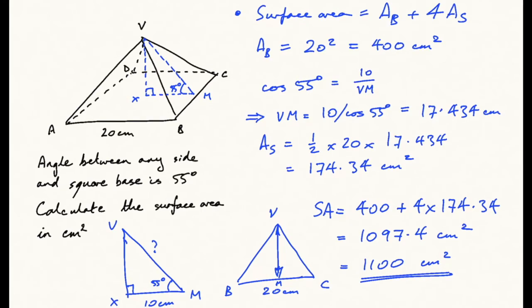That's the answer. An estimate of the mark scheme will be: one mark for finding the area of the base—that's a nice easy mark to pick up. A mark for finding the slant height VM, using that to find the area of one side, combining the base area and four of the sides to find the surface area, and then the final mark for giving it to two significant figures.